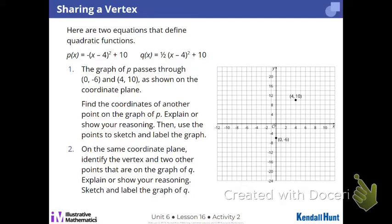We know they have the same vertex because in vertex form, here's my white ink. Here's my 4, right? And here's my 4 for my X value of my vertex. And here's my 10. Here's my 10. So 4, 10. And it is given to you on your graph right there. 4, 10.